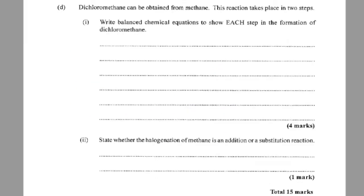Part D. Dichloromethane can be obtained from methane. This reaction takes place in two steps. Part one: write balanced chemical equations to show each step in the formation of dichloromethane. So let's just get right into it.